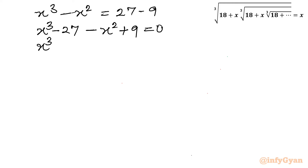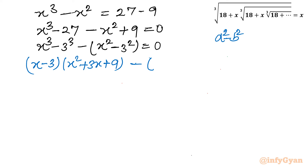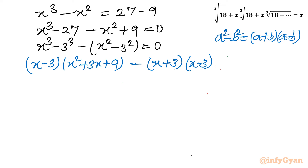We can see x cubed minus 27 is x cubed minus 3 cubed. Taking minus common from the second part gives minus times x squared minus 3 squared. Now applying two identities: a cubed minus b cubed gives (a minus b)(a squared plus ab plus b squared), so x cubed minus 3 cubed gives (x minus 3)(x squared plus 3x plus 9). For the difference of squares, a squared minus b squared gives (a plus b)(a minus b), so x squared minus 9 gives (x plus 3)(x minus 3). The equation becomes (x minus 3)(x squared plus 3x plus 9) minus (x plus 3)(x minus 3) equals 0.